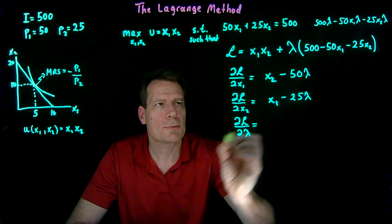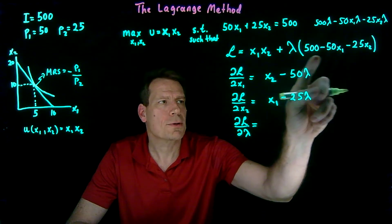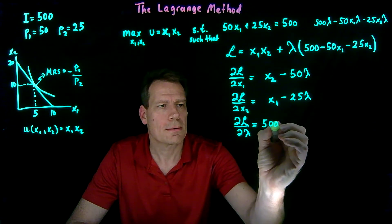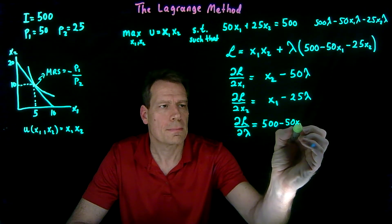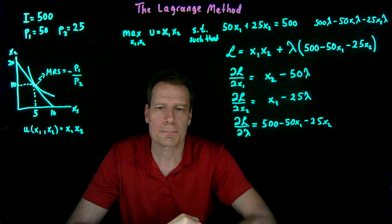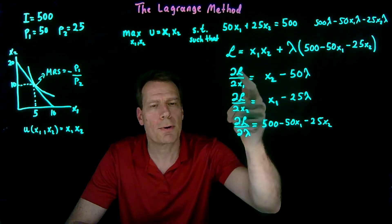And finally, differentiating with respect to lambda, well, that's just this. So that's just the budget constraint. 500 minus 50x1 minus 25x2. So we have our three partial derivatives.